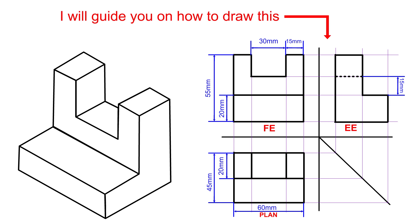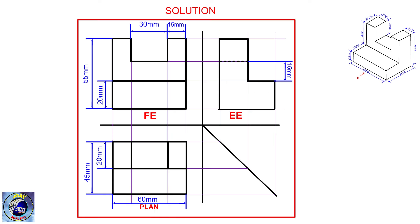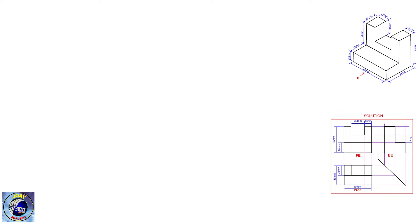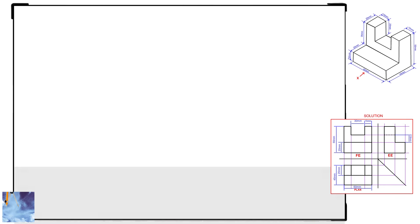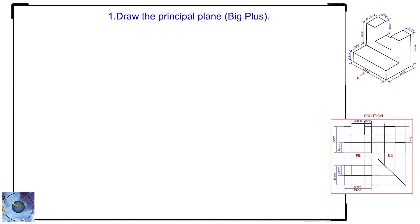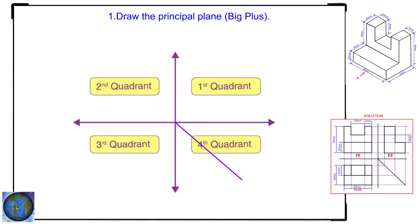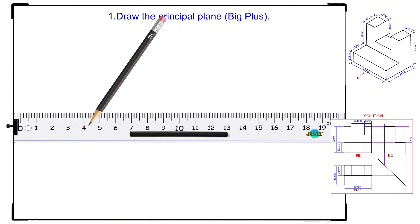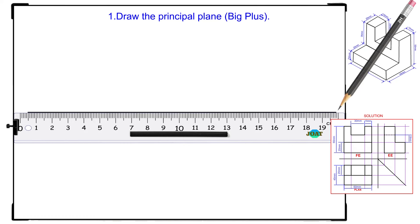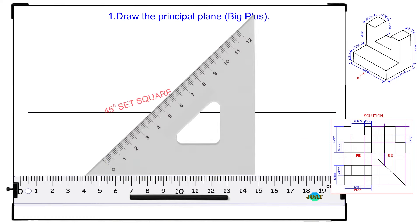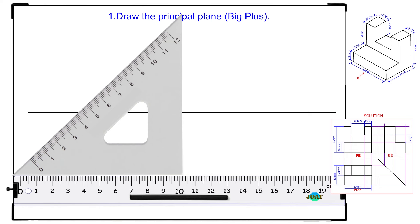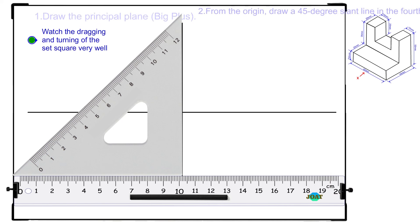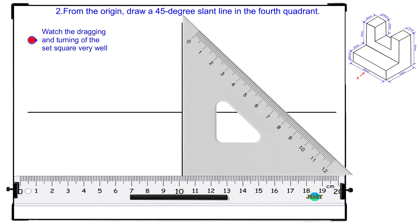I'll guide you through the process of drawing this orthographic view. Step 1: Draw the principal plane — a big plus. Step 2: From the origin, draw a 45-degree slant line in the fourth quadrant.